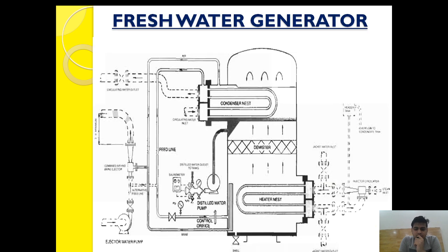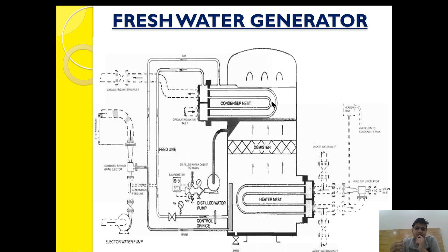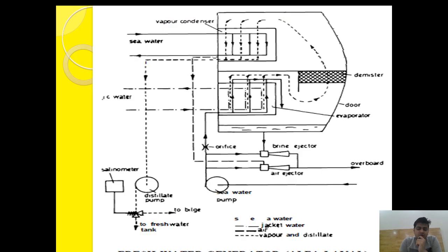This is another image from Mac George. Basically, in a fresh water generator there are two chambers — the condenser chamber and the evaporator chamber. In the evaporator chamber, heat exchange takes place between jacket water and sea water, which converts the sea water into vapor form. In the condenser chamber, the vapor is converted to distillate water. The condensed water is collected beneath a tray provided in the condenser and taken out by a distillate pump.